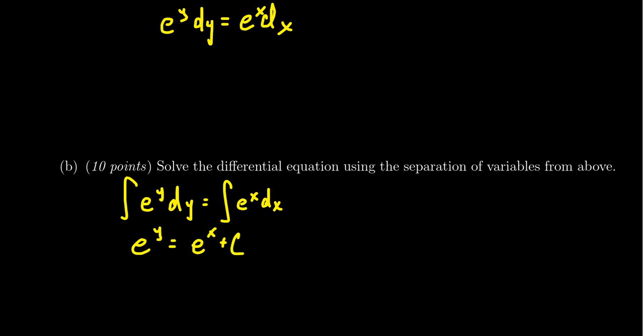We do need to have a constant in here because there could be an arbitrary constant. Let's put it on the right-hand side—you don't need it on both sides. So we get e^y = e^x + C. To solve for y, we take the natural log of both sides: y = ln(e^x + C).